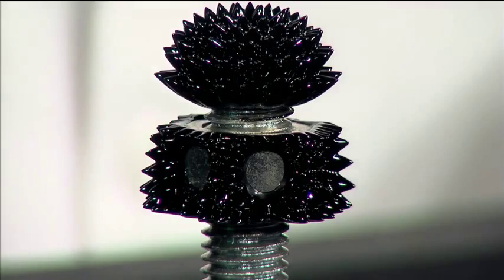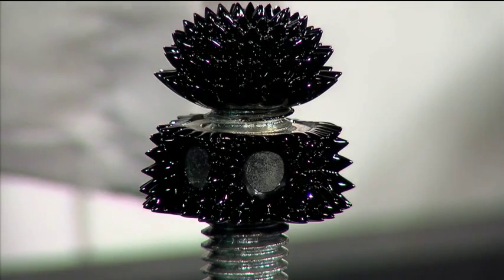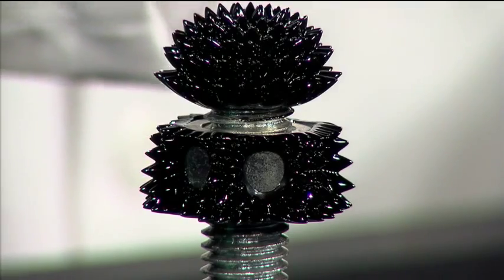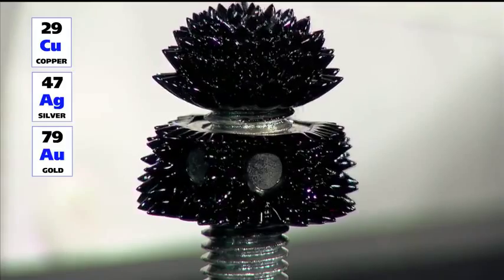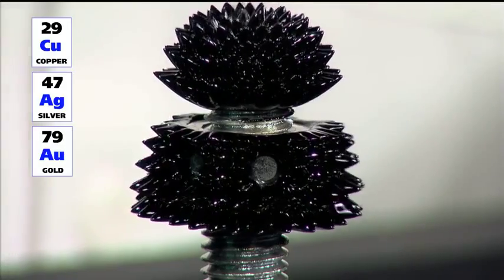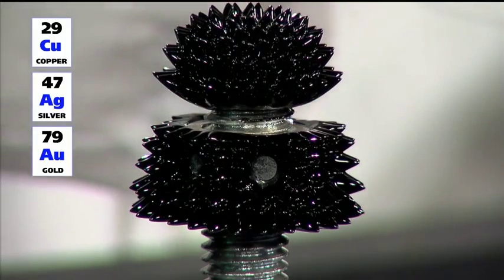When you look at the periodic table, you can see that the materials that are in a column have similar properties. For example, take a look at 29, 47, and 79. These are copper, silver, and gold. To keep it simple, they are all soft metals and sit in the same column.